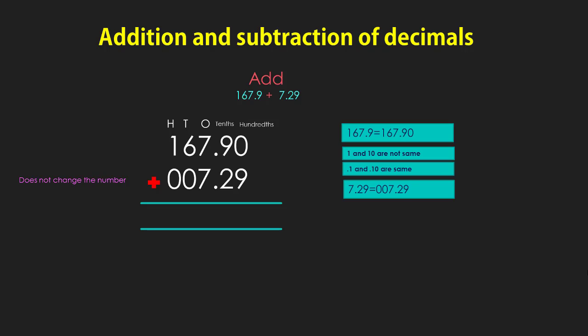Now add from the rightmost column. In the hundredths column, add 0 plus 9 — we get 9. Now add 9 plus 2 — we get 11, so we put 1 in the tenths column and carry 1 to the ones column. Now write the decimal point. Adding 7 plus 7 plus 1, we get 15 — put 5 in the ones column and carry 1 to the tens column. 1 plus 6 gives 7, and 1 plus 0 gives 1. So our sum is 175.19.